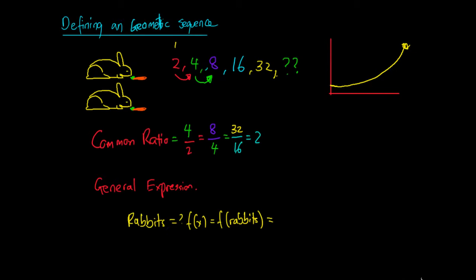We can do this by creating a geometric sequence. With a geometric sequence, we have specific notation using three main terms. We have a first term in our series — we know I started with 2 rabbits — and we'll refer to this as a, the first letter of the alphabet, representing the first number in the series. So for this example, a equals 2. We also know the common ratio, which we'll refer to using r for ratio. The common ratio is 4 divided by 2, or 8 divided by 4, or even 32 divided by 16, and we've already worked out it equals 2. So our first number is 2 and our common ratio is also 2.